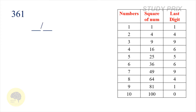The first question given here is 361. The square root of this number must be a 2-digit number. The first step is to take the last digit. The last digit is 1. Come to the table and find where the last digit 1 lies — it appears at 1 and at 9. So the last digit of the answer must be 1 or 9.